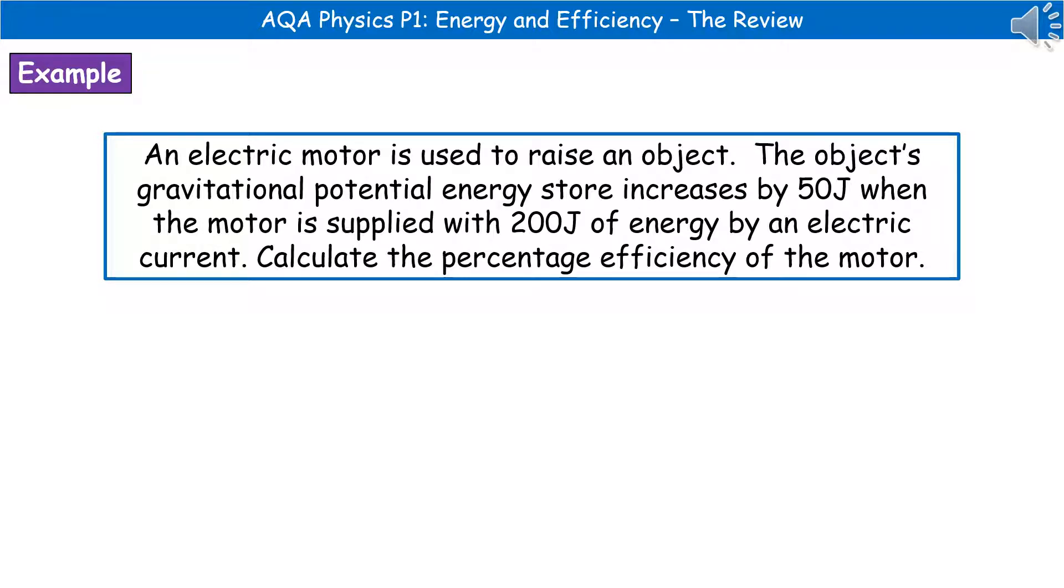An example of the kind of question you could be asked is here. An electric motor is used to raise an object. The object's gravitational potential energy store increases by 50 joules when the motor is supplied with 200 joules of energy by an electric current. Calculate the percentage efficiency of the motor.